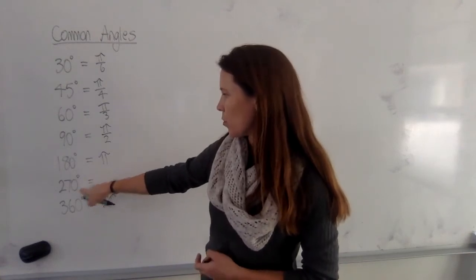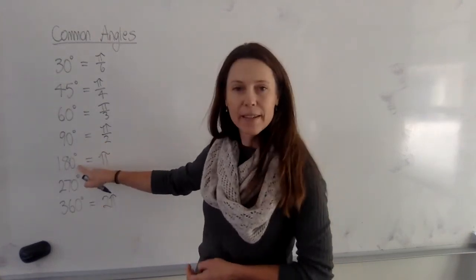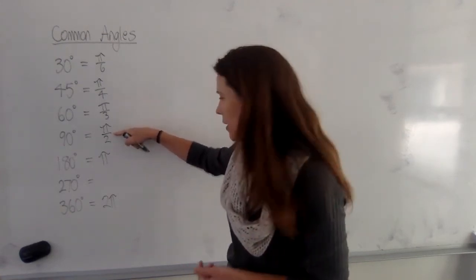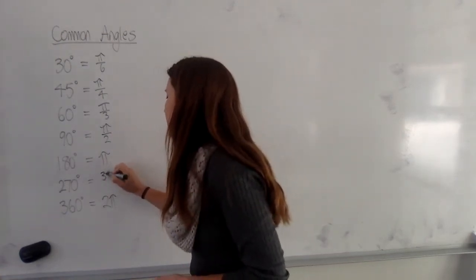270 degrees, well, that's 90 plus 180, isn't it? So if you have one pi, and you add it to half a pi, you have one and a half pi, or 3 pi on 2.